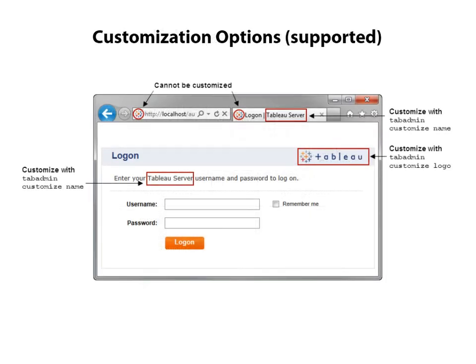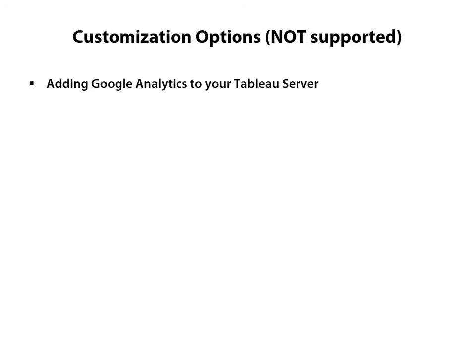The last thing I talk about in the course is customizing Tableau. There are some basic things you can customize out of the box, and then there are other things I've developed that are not officially supported by Tableau but I've used in many instances to help customize. One is adding Google Analytics to Tableau Server — a great way to understand how many people are coming to your site, the time they're spending on the site, what views they're visiting, what the flow is, and real-time analytics about your Tableau Server.